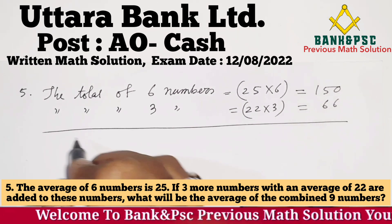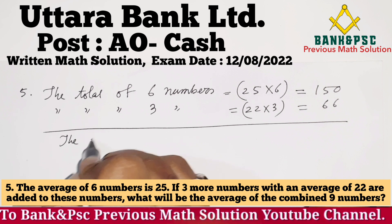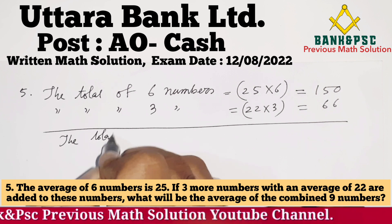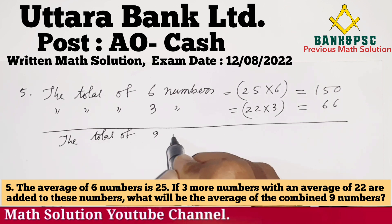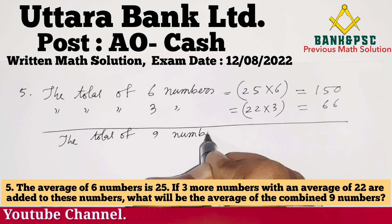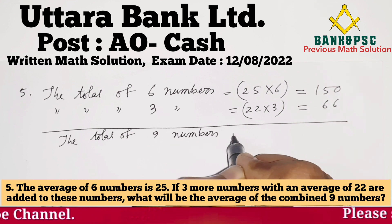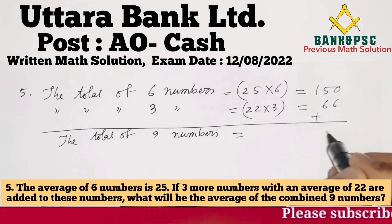Adding those 3 together gives 9. The total of 9 numbers combined is calculated as the sum.